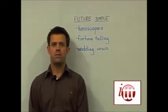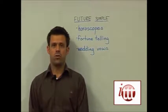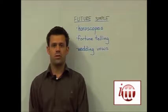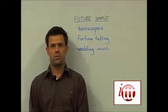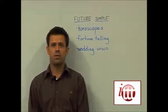Additional ideas for the future simple include horoscopes — divide your class into groups, provide a zodiac sign, they'll create a horoscope for that sign, then gather and share them to see who they apply to. Then we have fortune telling as a role play, where a student comes to see a fortune teller who makes statements like 'you'll have a baby next year' or 'you'll get a great job promotion soon.' Finally, we have wedding vows — encourage students to create ideal or silly wedding vows, anything that makes a promise. This could also include employment contracts.